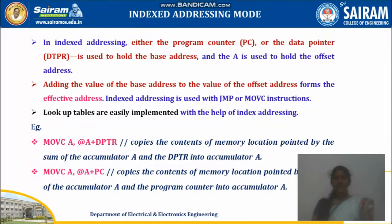Next is indexed addressing mode. In this mode, either the program counter or the data pointer is used to hold the base address. The accumulator is used to hold the offset address. Adding the base address to the offset address forms the effective address.